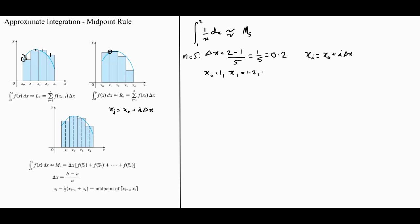So the points are, of course, x1 is equal to 1.2, x2 is 1.4, x3 is 1.6, x4 is 1.8, and of course, x5 is 2.